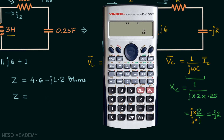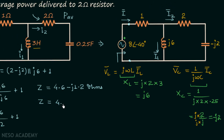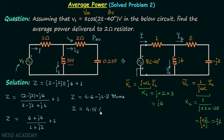To convert from rectangular to polar form using the scientific calculator, input the rectangular form 4.6 − 1.2i, then press Shift and the plus sign, and press Equal to get the magnitude: 4.75. To get the angle, press Shift then Equal again, giving −14.62°. So Z = 4.75∠−14.62°.